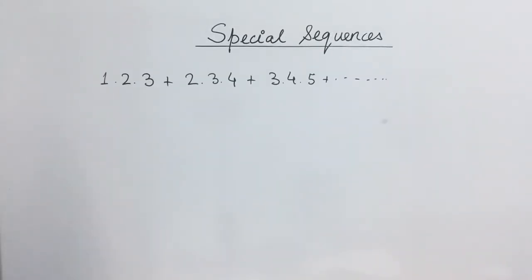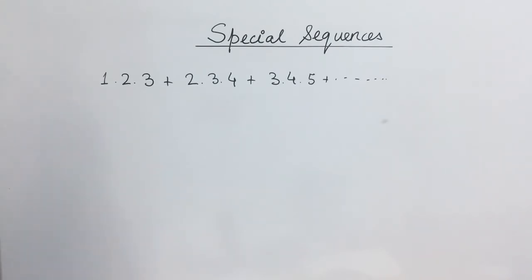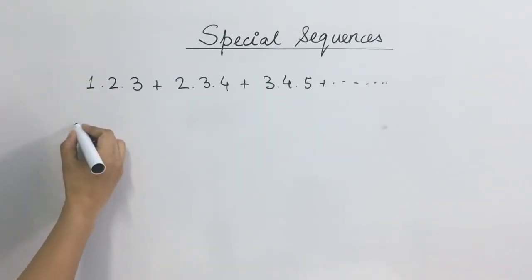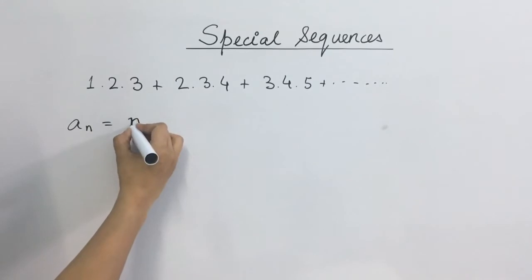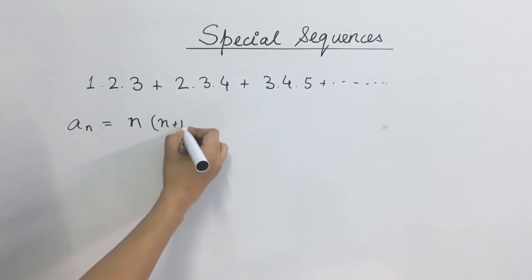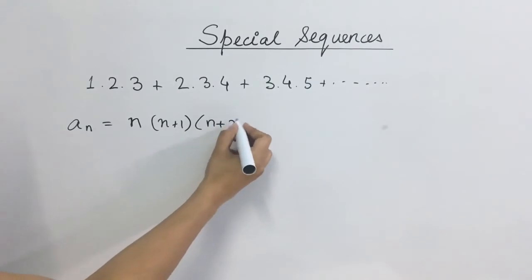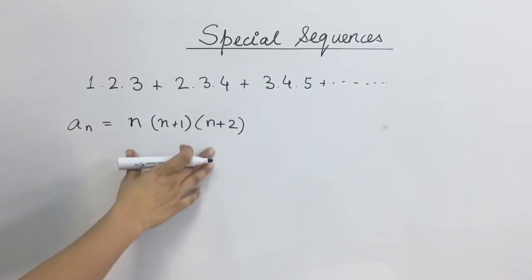Now let us understand this concept with the help of an example. You are asked: find the sum up till n terms of the following series, which is 1·2·3 + 2·3·4 + 3·4·5 and so on. Ab ye na AP hai, nahi GP, nahi HP, aur nahi ye sum of natural numbers hai. Is case mein, pehle humay iska general term find out karna hai. Iska hum likh sakte hain: a_n equals to n, toh doosra number kya ho jayega? n plus 1, and next number will be n plus 2.